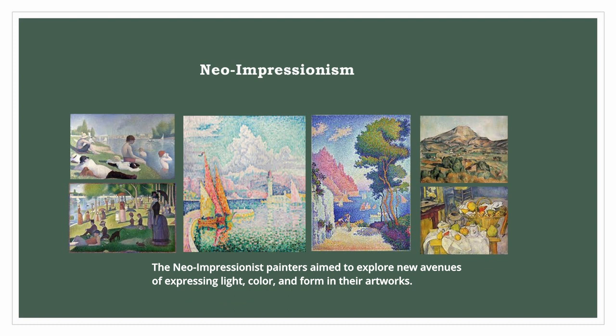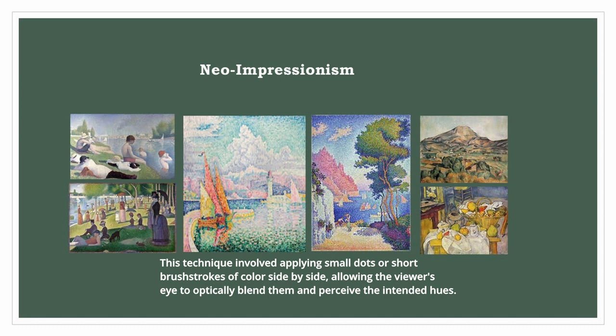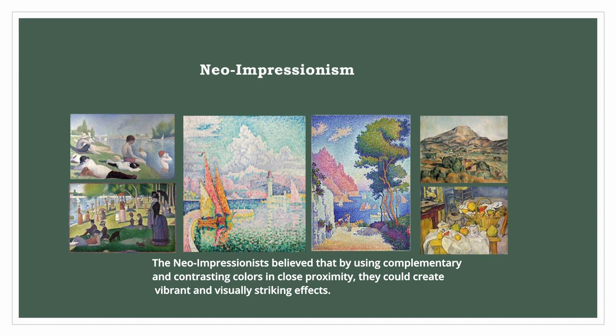The Neo-Impressionist painters aimed to explore new avenues of expressing light, color, and form in their artworks. Their objective was to achieve heightened luminosity and optical harmony by meticulously placing individual brushstrokes or dots of pure, unmixed colors on the canvas. This technique involved applying small dots or short brushstrokes of color side by side, allowing the viewer's eye to optically blend them and perceive the intended hues. The Neo-Impressionists believed that by using complementary and contrasting colors in close proximity, they could create vibrant and visually striking effects.